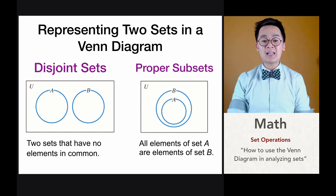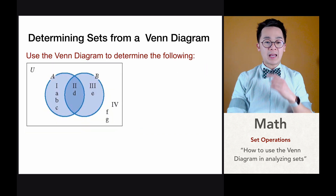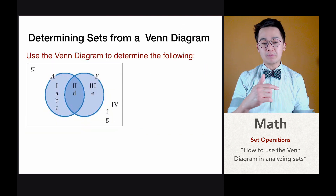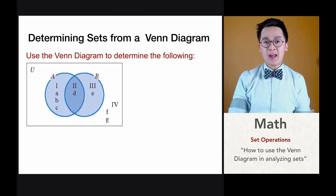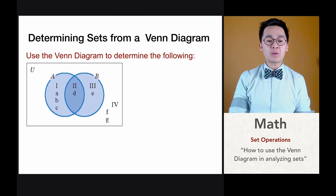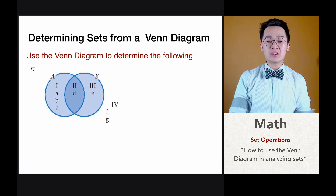These are some of the subsets we're going to be using in subset operations. Now let's say we have a Venn diagram where the union set U is composed of all the elements of A and B and elements outside both. We have group A with elements 1 and 2, group B with elements 2 and 3, and the outside group which has elements F and G.